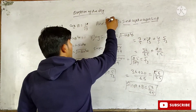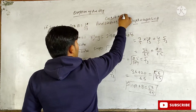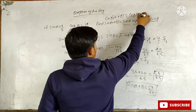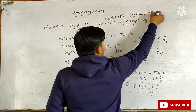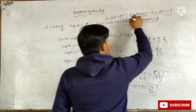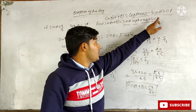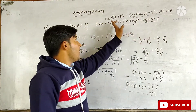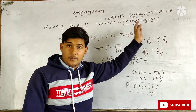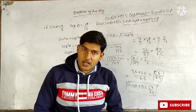Similarly, we can find the value of cos(A + B). Cos(A + B) equals cos A cos B minus sin A sin B. We have all the values — just put them into this equation and you can easily find cos(A + B). Find the value and put your answer in the comment box.